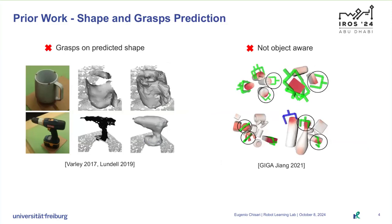Other prior works investigate the synergy between geometry reasoning and grasp predictions. Some methods first reconstruct the 3D shape of the objects and then use it to predict the grasp. The issue is that the grasp performance now depends on the shape reconstruction quality, and shape reconstruction itself is a difficult problem. More similar to our method, GIGA proposes a multi-task learning approach that uses a shared representation to simultaneously predict a scene 3D shape and grasp poses. Nevertheless, this method operates at the scene level, does not reason about objects in the scene, and is therefore limited to random object picking.